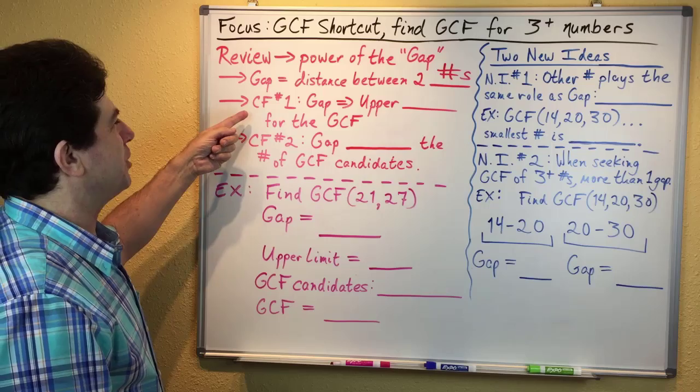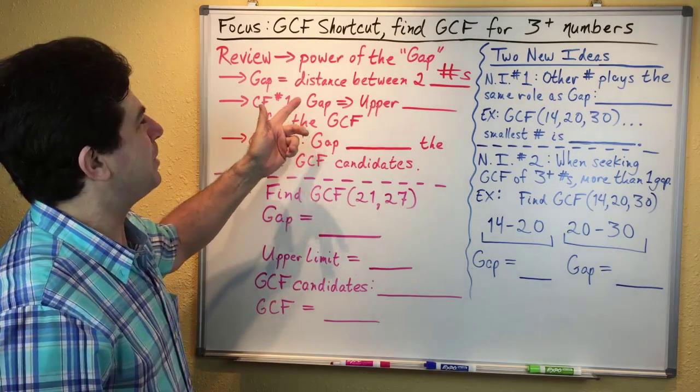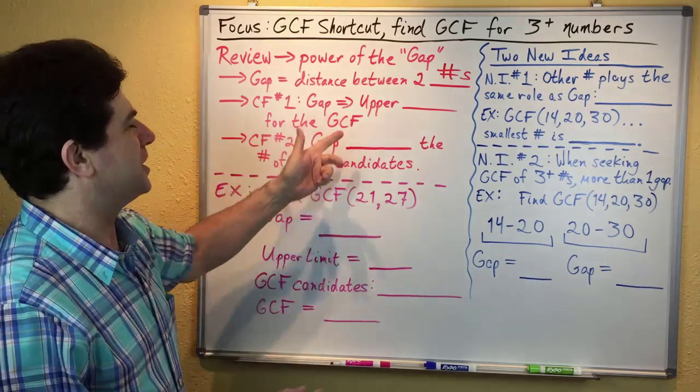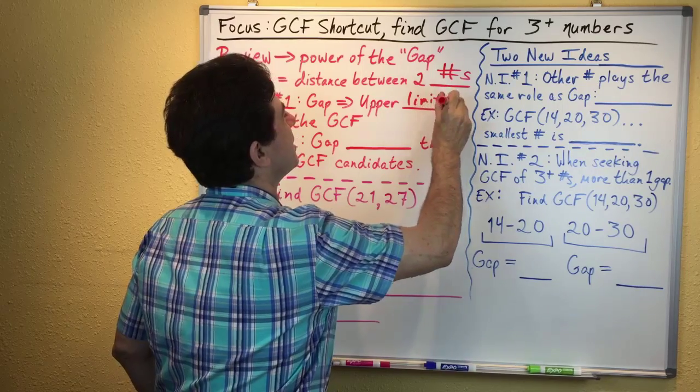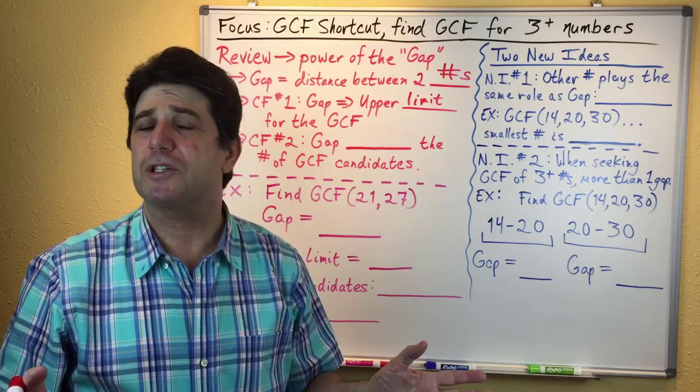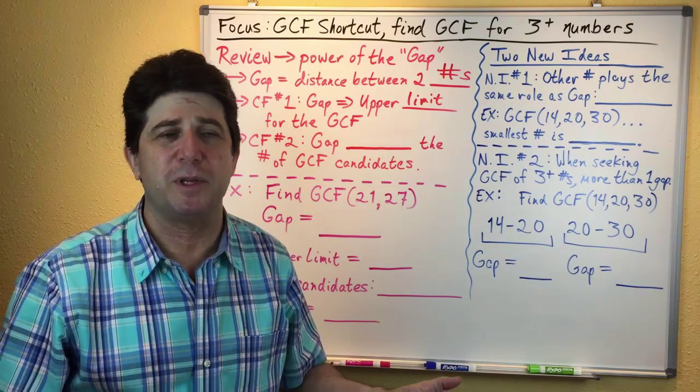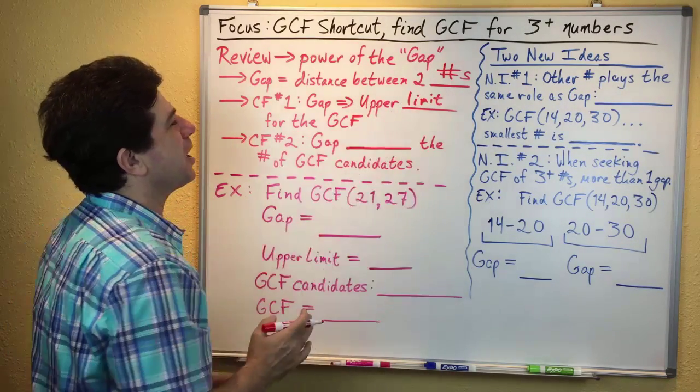One nice thing about the gap, cool fact number one, is that the gap establishes the upper limit for the GCF. That means once you know what the gap is, you don't need to check any numbers larger than that because that's as big as the GCF could possibly be. It tells you when you can stop checking numbers.